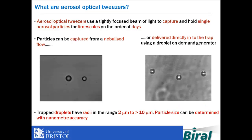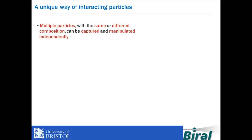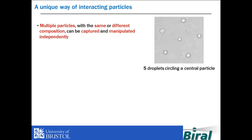Trapped droplets can have radii in the range of 2 microns to greater than 10 microns, and we can determine the size of the particle with nanometer accuracy by using a number of techniques I will discuss later on. We can also trap multiple particles with the same or different compositions and manipulate these droplets independently. This video shows five droplets being rotated around a sixth particle, which remains immobile in the centre of the array.